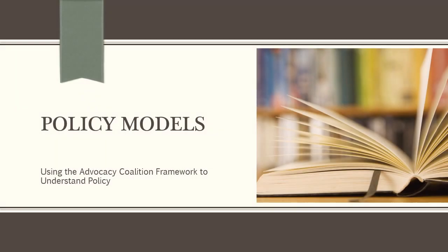Now that you've hopefully read the chapter I assigned for this module and understand a little bit about policy theory, I want to walk you through one of the models mentioned in your reading in a bit more detail. And that model is the Advocacy Coalition Framework. It's one of the more common models used by political scientists to study the policymaking process. I'm introducing it to you here with the goal of having you start to think in terms of the framework's concepts when you read the assigned articles about California's housing policy this week.